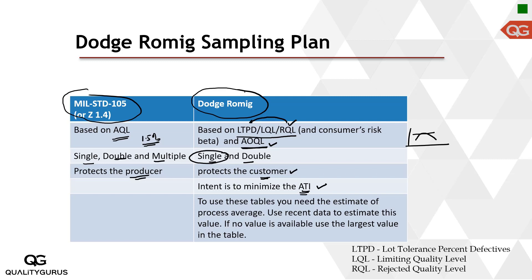To use Dodge-Romig tables, you need the process average — an estimate of what percentage of rejections your process is producing on average: 1%, 1.5%, and so on. You get this value by looking at past history and recent data. If you have no process average available, you use the largest value in the table, which represents the worst process average.